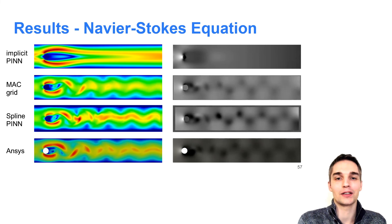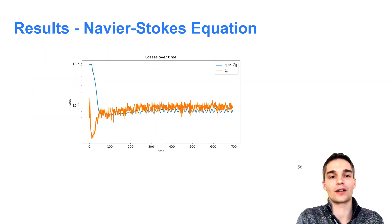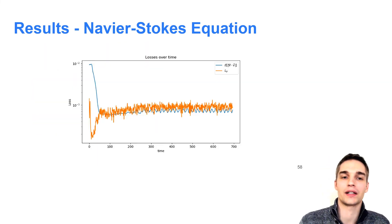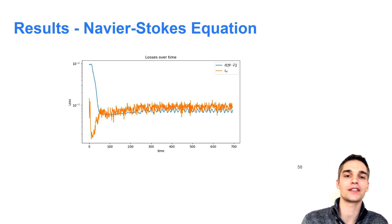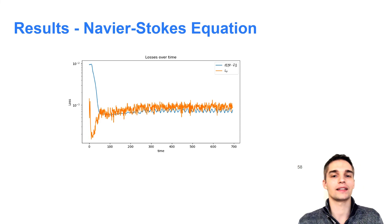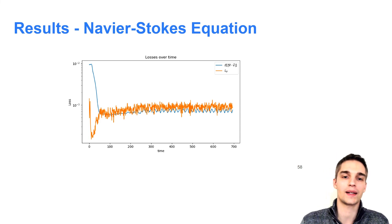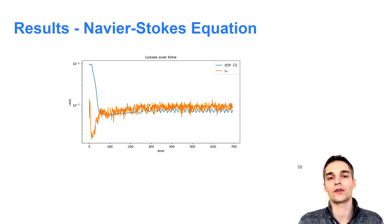Finally, we also investigated the stability of our spline PIN method for the Navier-Stokes equation. As for the wave equation, the simulation starts with a short initial warm-up phase. Since we zero-initialize the vector potential, the boundary conditions at the in and outlets of the domain are not met at the beginning of the simulation, leading to high divergence errors. However, the network starts up the simulation fairly quickly and after around 100 iterations, we get stable results for hundreds and even thousands of time steps.